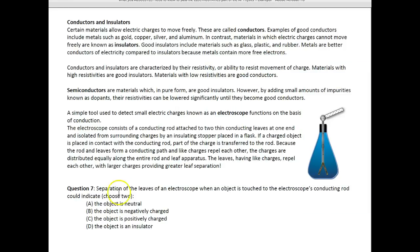For number seven, it says separation of the leaves in an electroscope when an object is touched could indicate, well, we know that the object would not be neutral. We know that that object would definitely not be neutral because neutral charges would not produce those two things having to come apart. So instead of being neutral, what we're going to do is we're going to look at the other ways that they're charged. So neutral would not work.